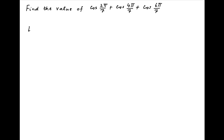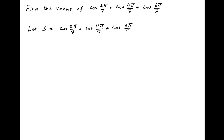Let's denote the given expression by S. Therefore, S is equal to cos(2π/7) plus cos(4π/7) plus cos(6π/7). Now multiply and divide this expression by 2sin(π/7).